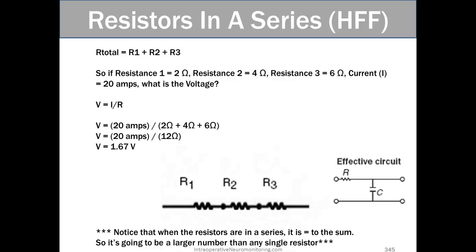Notice that when resistors are in series, it is equal to the sum, so it's going to be larger than the number of any single resistor. So you just have to keep that straight in your head where resistors and capacitors are the opposite. Resistors in series are additive. Resistors in parallel is going to be less than the original resistance.